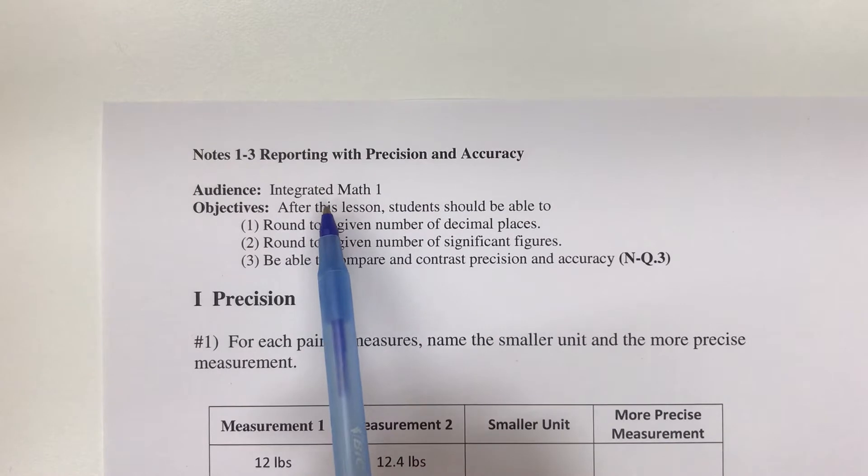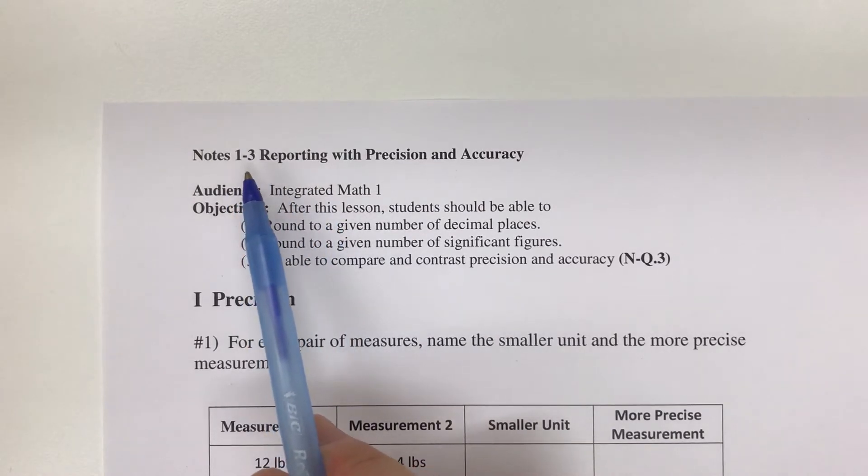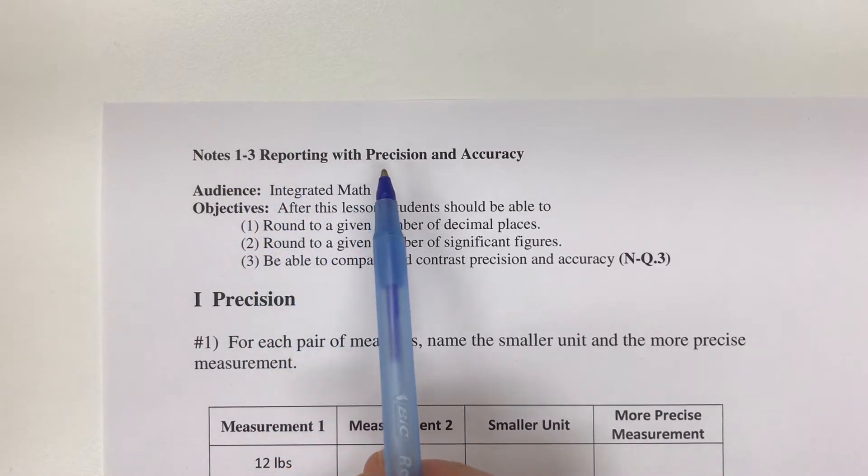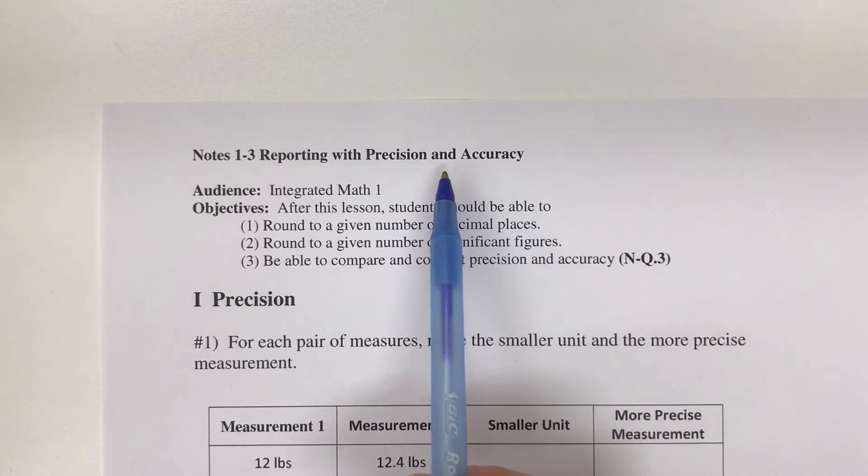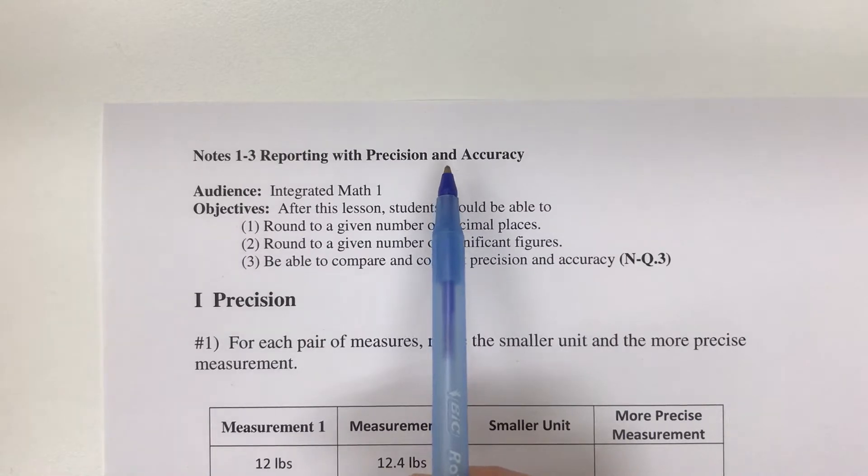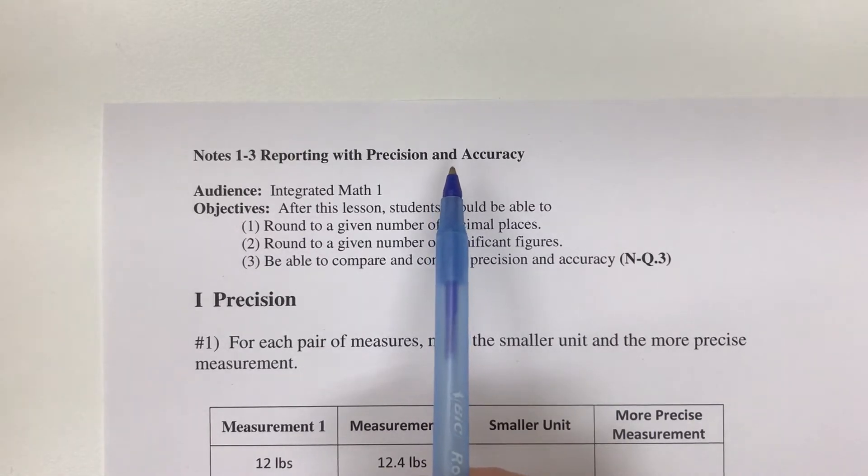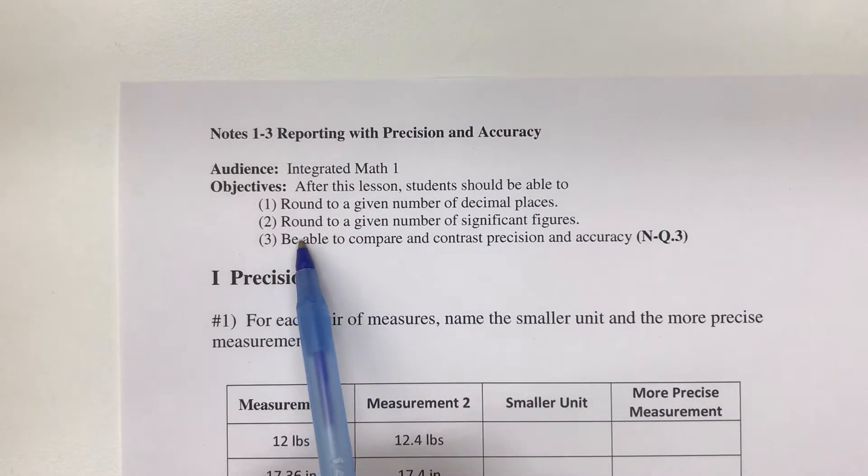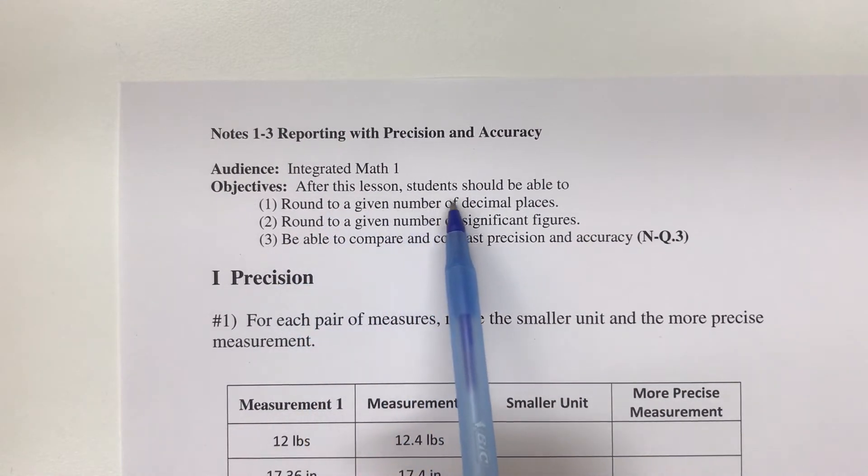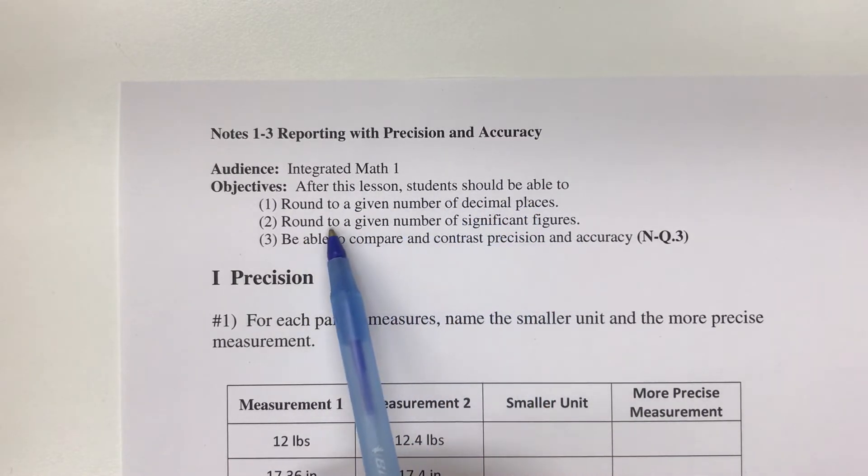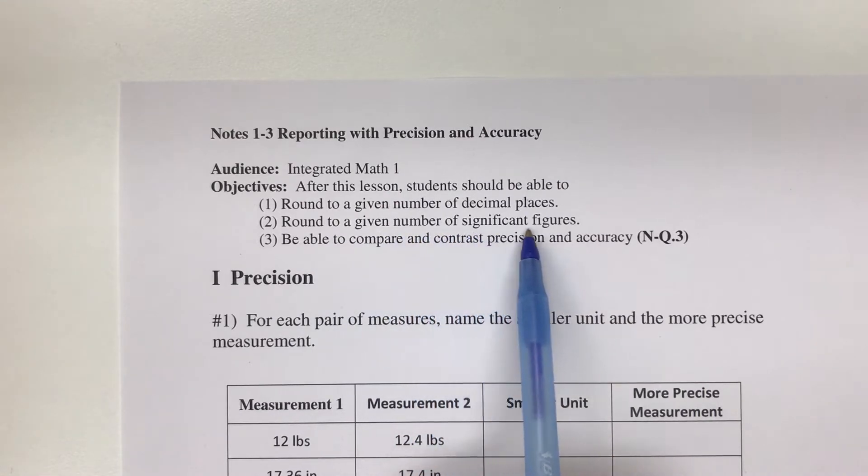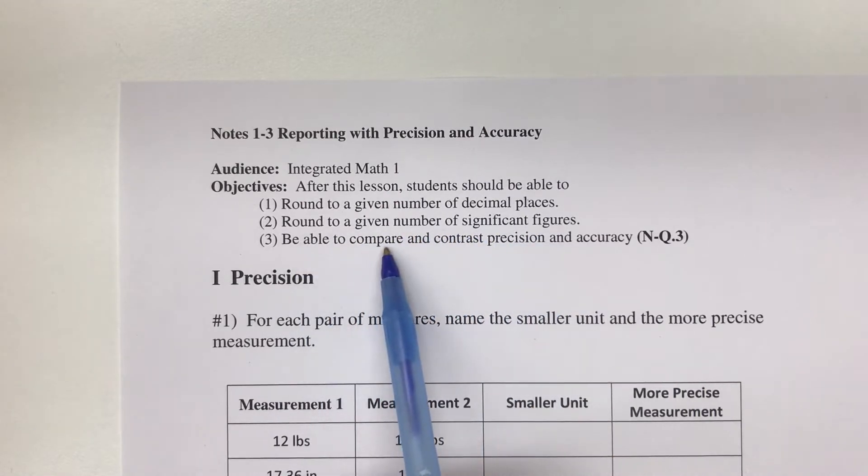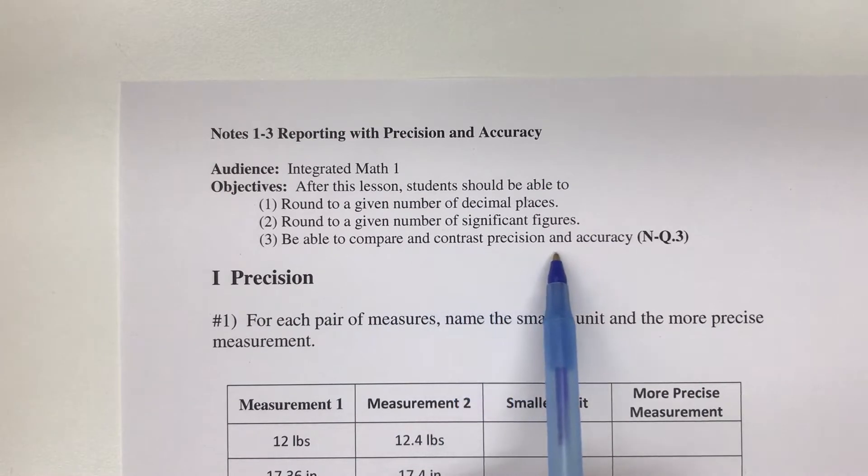Okay, Integrated Math 1 fans, our topic for today is Notes 1-3: Reporting with Precision and Accuracy. Before we begin, let me give you your joke of the day: I decided to sell my vacuum cleaner; it was just gathering dust. After this lesson, students should be able to round to a given number of decimal places, round to a given number of significant figures, and be able to compare and contrast precision and accuracy.